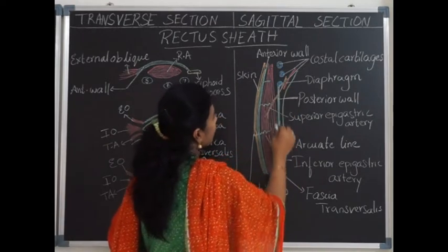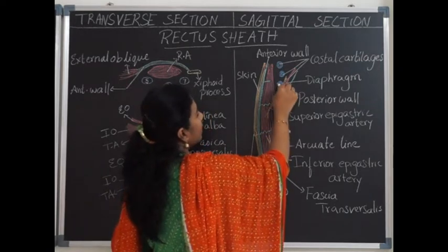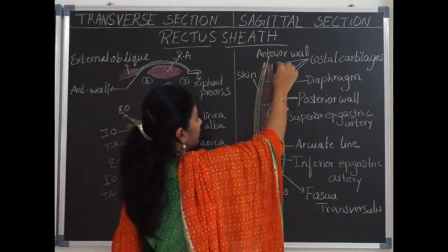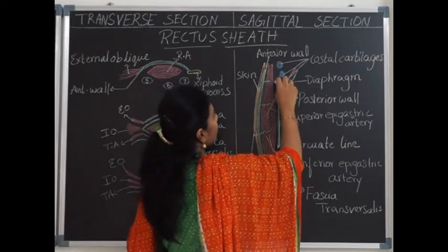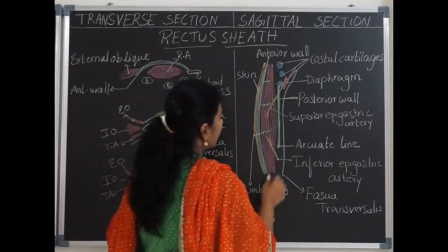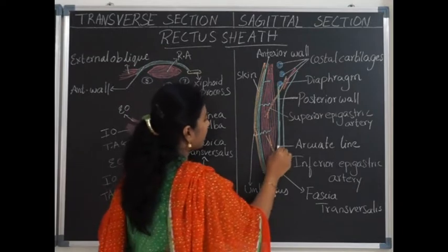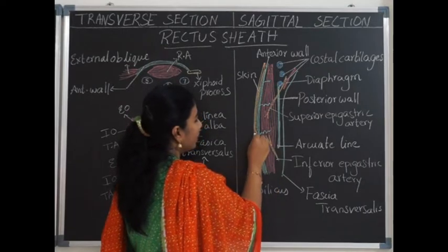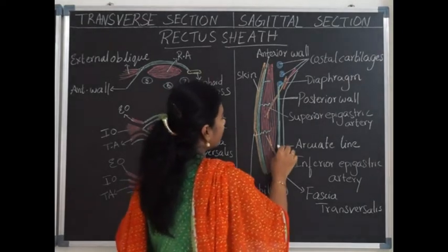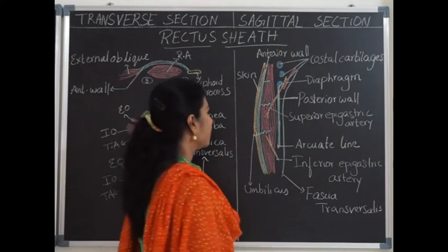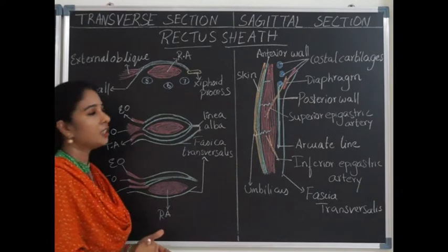The posterior wall of the rectus sheath is deficient in its upper part, where it is directly related to the costal cartilages of the ribs — above the costal margins the posterior wall is deficient. And below a line called the arcuate line — which is located midway between the umbilicus and pubic symphysis — the posterior wall is also deficient. Let us now see the composition of the anterior and posterior walls.